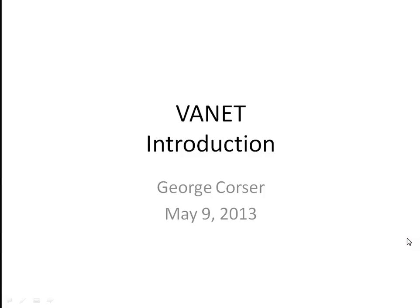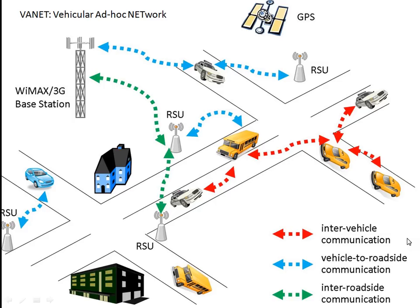What is a VANET? VANET stands for Vehicular Ad Hoc Network, so it's a vehicle network — digital communications between cars and trucks, and also roadside units, antennas and buildings, and so forth.